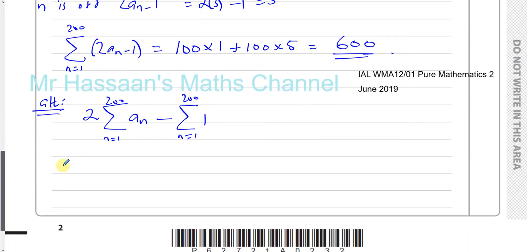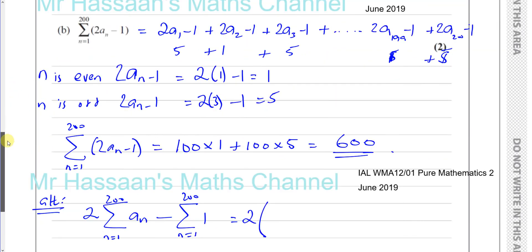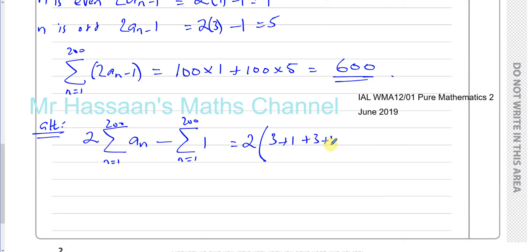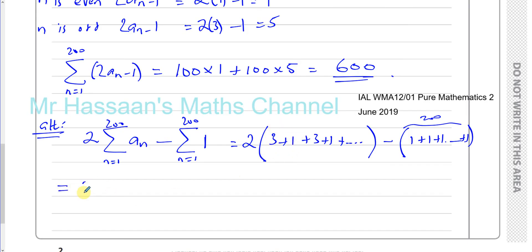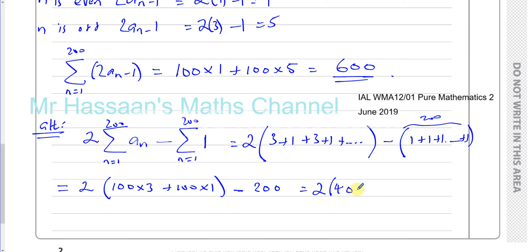So you get 2 times the sum of aₙ from 1 to 200, minus the sum of 200 ones. The aₙ sum gives 3 + 1 + 3 + 1 + … — 100 threes and 100 ones — so 100×3 + 100×1 = 400. The constant sum is just 200. That gives 2 × 400 − 200 = 800 − 200 = 600. The same answer as before.